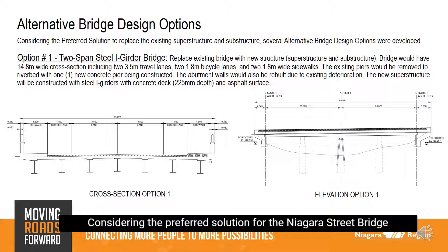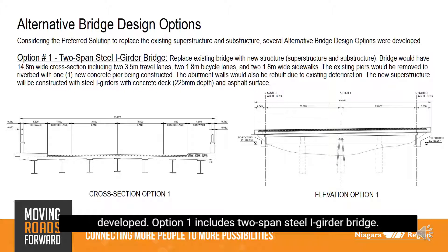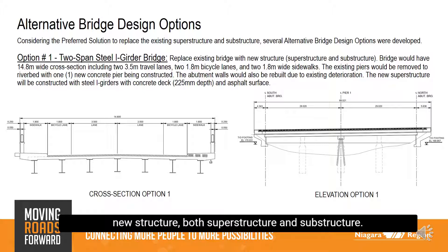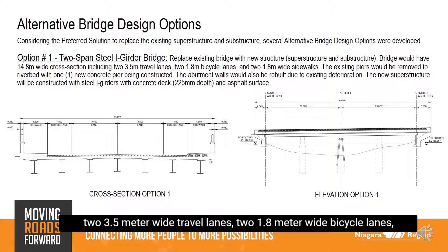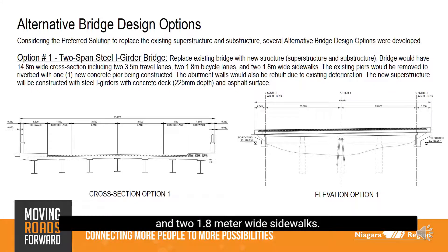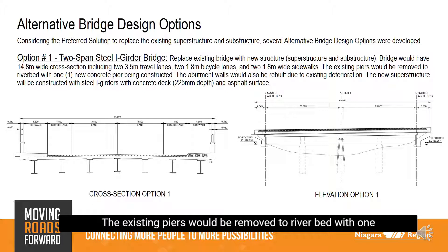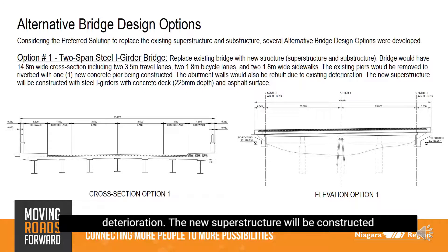Considering the preferred solution for the Niagara Street Bridge replacement was to replace the existing superstructure and substructure, several alternative bridge design options were developed. Option 1 includes a two-span steel I-girder bridge, replacing the existing bridge with a new structure — both superstructure and substructure. The bridge would have a 14.8-meter wide cross section, including two 3.5-meter wide travel lanes, two 1.8-meter wide bicycle lanes, and two 1.8-meter wide sidewalks. The existing piers would be removed to riverbed with one new concrete pier constructed, and the abutment walls would also be rebuilt due to existing deterioration. The new superstructure will be constructed with steel I-girders with concrete deck and asphalt surface.